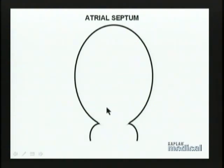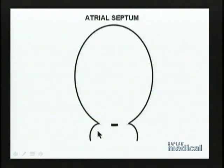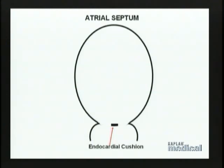The first thing we can do is put in the center of the atrioventricular canal a separation, or septum, sometimes called the atrioventricular septum but most commonly referred to as the endocardial cushion. The endocardial cushion will develop in the atrioventricular canal and thereby separate it into a right and a left atrioventricular canal.